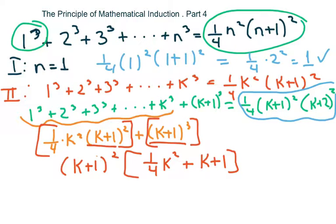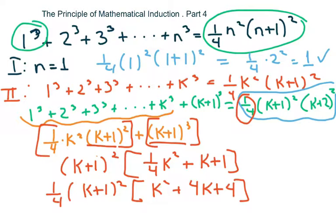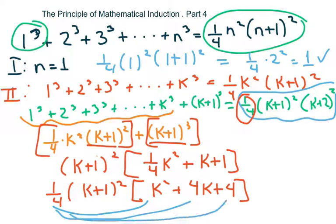Now I'm going to factor out the one-fourth and bring it out front, giving me one-fourth times (k plus one) squared times (k squared plus 4k plus four). If you multiply it back you should get the previous expression — we're essentially multiplying through by four or dividing by one-fourth.